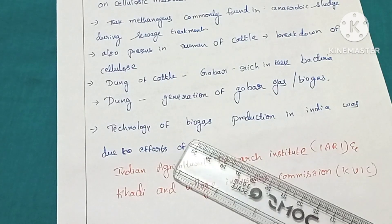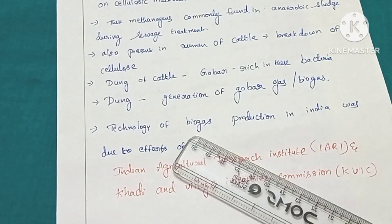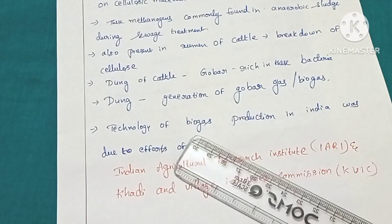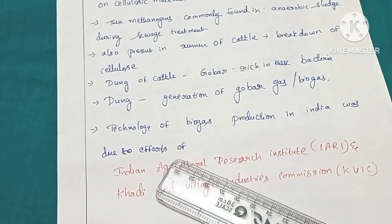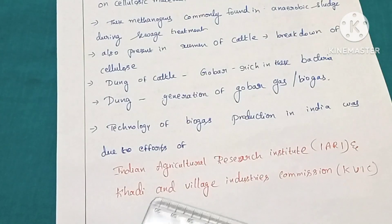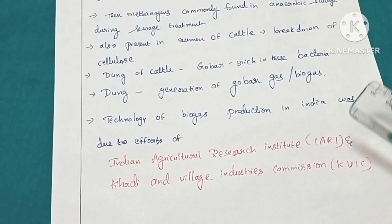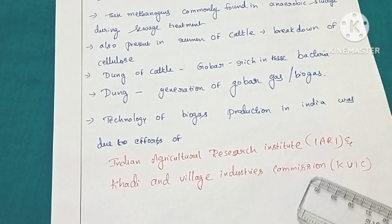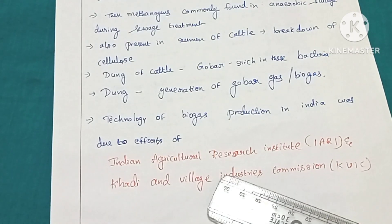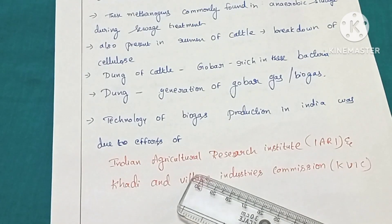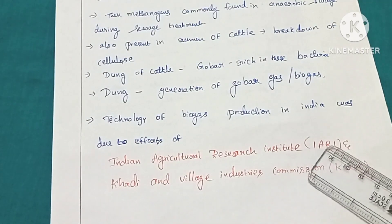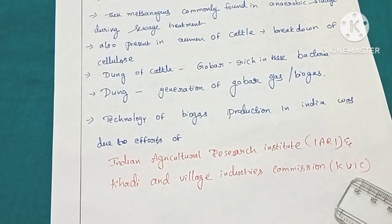In rural areas, dung is used to generate biogas, which is used for cooking and lighting purposes. The technology of biogas production in India was developed due to the efforts of IARI — the Indian Agricultural Research Institute — and KVIC, the Khadi and Village Industries Commission.